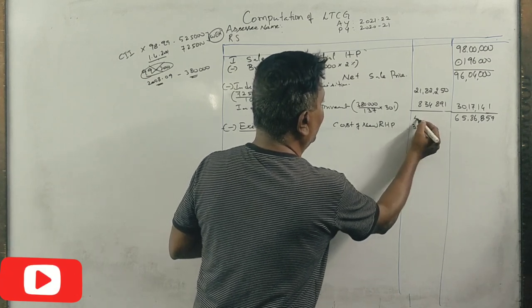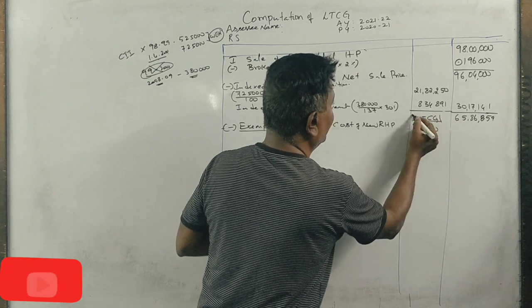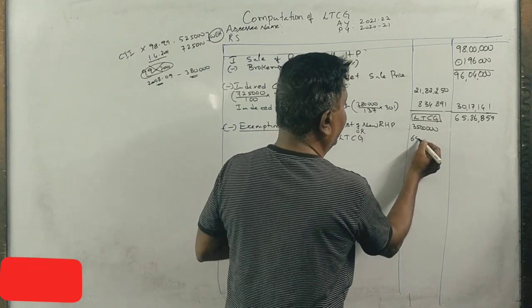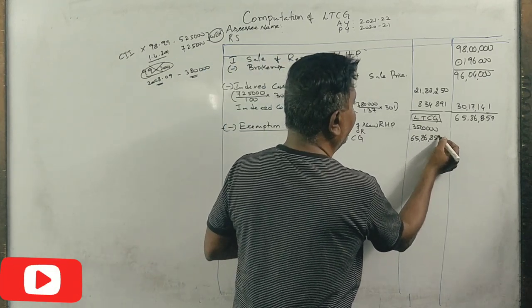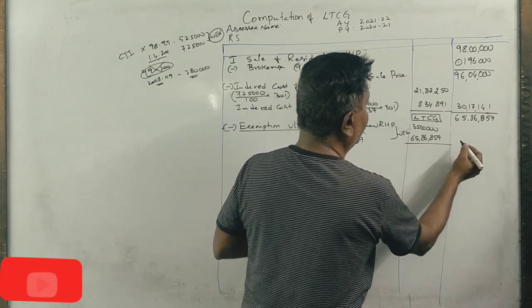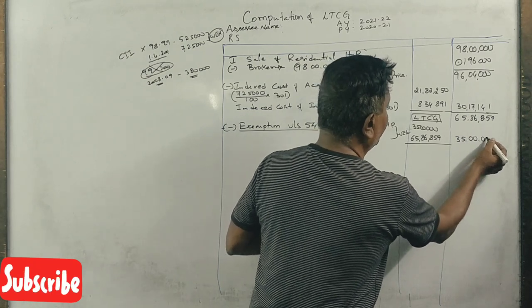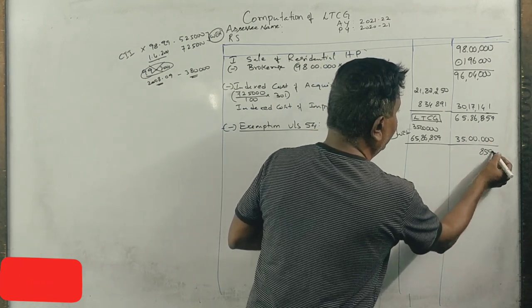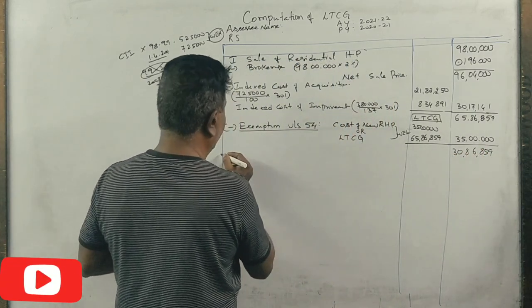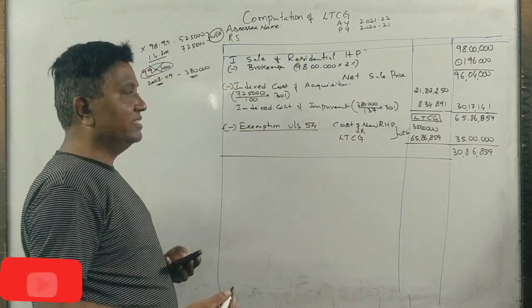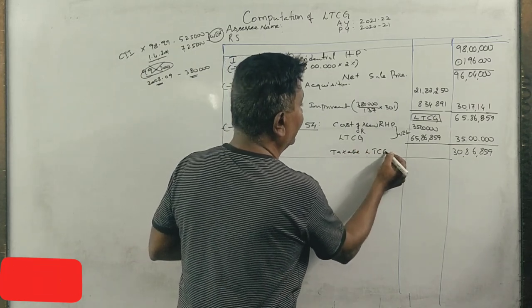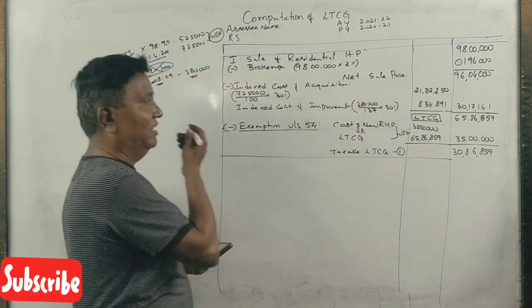Long term capital gain is Rs 65,86,859. The new house was purchased in December 2021 for Rs 35 lakhs, so exemption is Rs 35 lakhs. This gives us taxable long term capital gain number one of Rs 30,86,859.